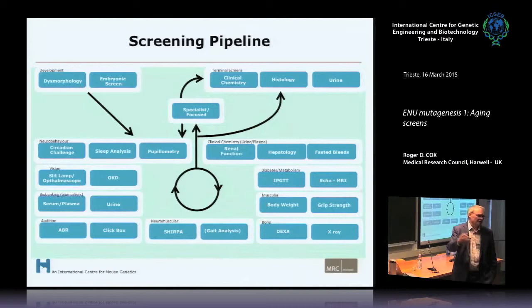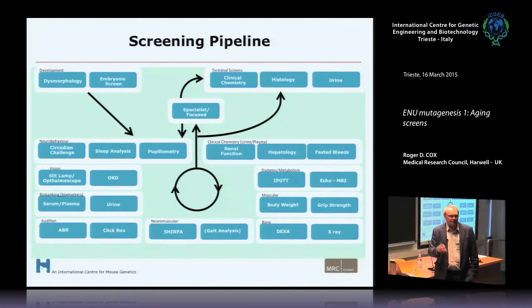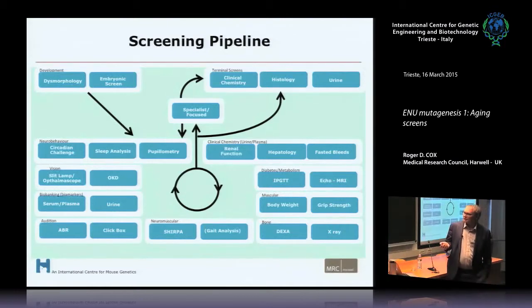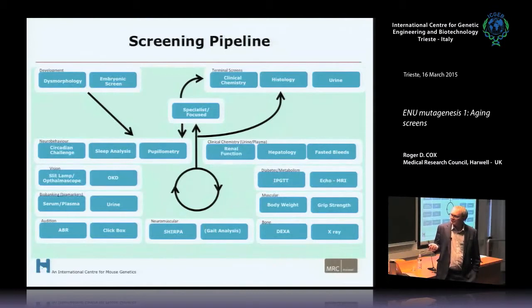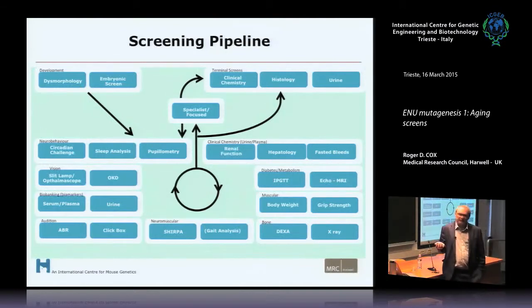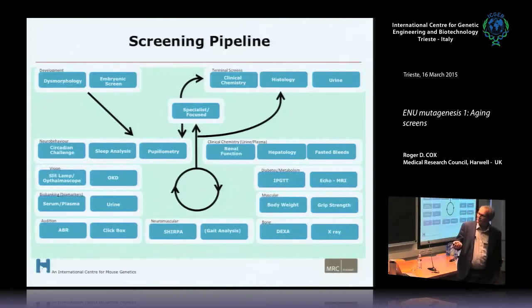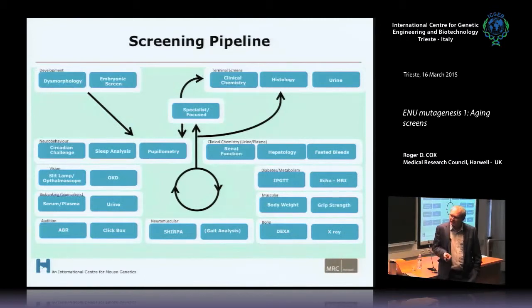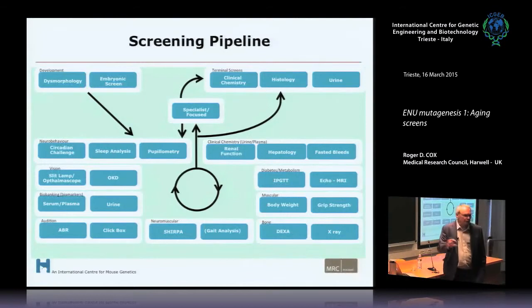We have the opportunity to pick out early onset phenotypes, say at 12 weeks, and distinguish those from later onset ones, and also to follow the progression of traits over time — does it get worse? There are screens based on clinical chemistry, fasted bleeds, tests to reveal renal function, a glucose tolerance test, EchoMRI for body composition, body weight, and DEXA for fat, lean mass, and bone parameters. In the neurobehavioral area there's a circadian challenge, sleep analysis, and pupillometry. In the deafness screen there's a click box and brainstem auditory response as a more detailed test.